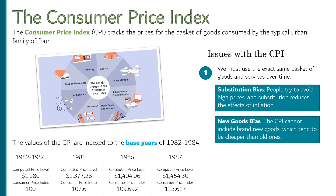Another source of bias is that the CPI cannot include brand new goods. Consider how much cheaper it has gotten over the past couple of decades to take a picture of something. You used to have to buy an expensive camera and film and have the picture developed at a lab. But these days the cameras come attached to our phones and you don't need to develop them. The CPI has no way of really measuring how that price is going down for people. So again, this means the CPI probably overstates inflation.